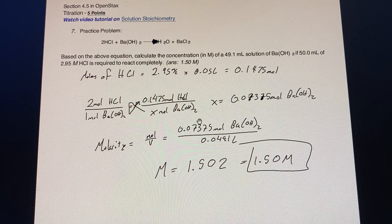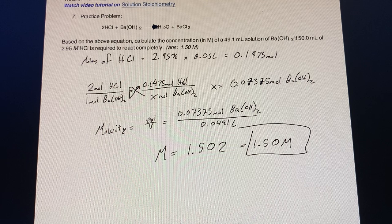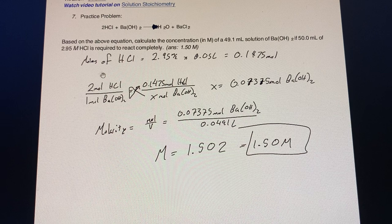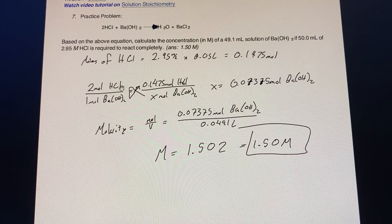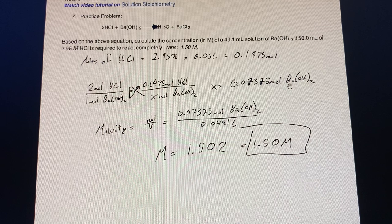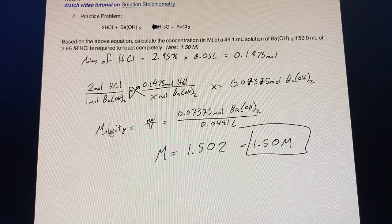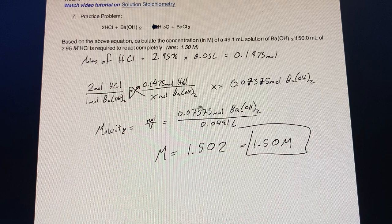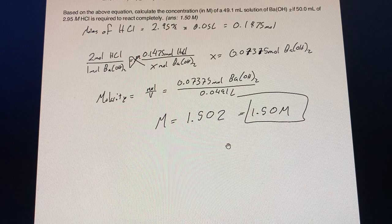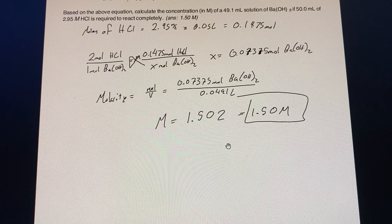Here we're doing a solution stoichiometry where we're finding the molarity of the concentration. We first find the number of moles of the HCl, which is 0.1475 moles. Then we do what we did in the earlier problems, which is cross multiplying to figure out the number of moles of Ba(OH)2. Once we have the number of moles of Ba(OH)2, we're able to use what we know for molarity, that it's moles over volume in liters. We plug in that value for the moles of Ba(OH)2 and the volume which is given to us in the question, and we find that the answer is 1.50 molarity.